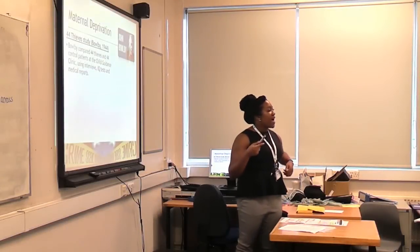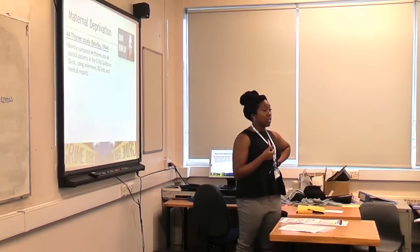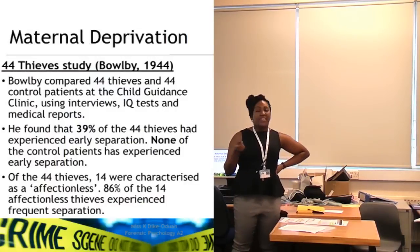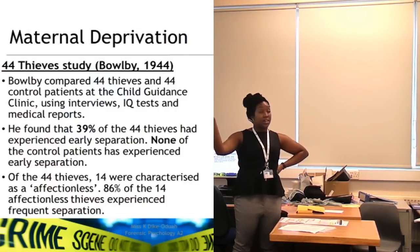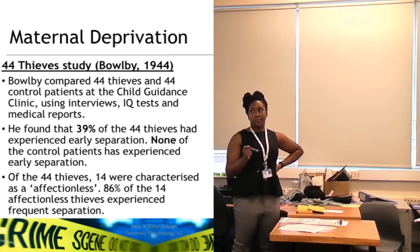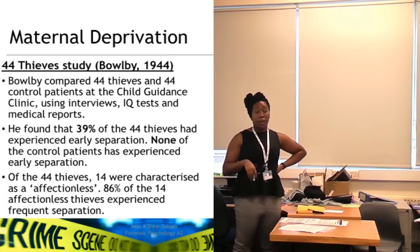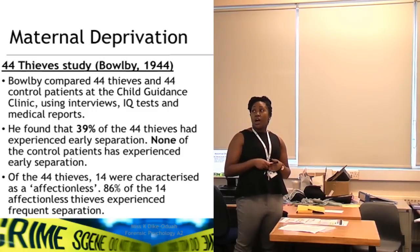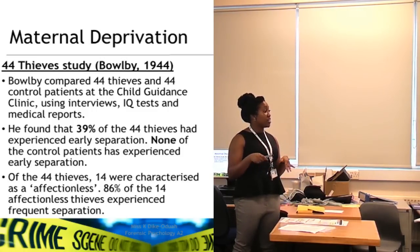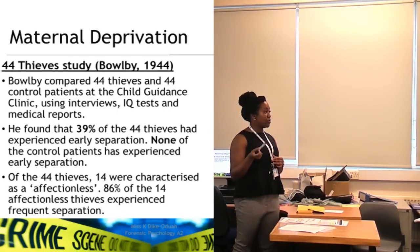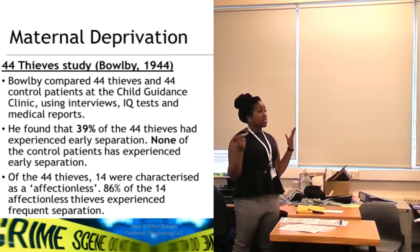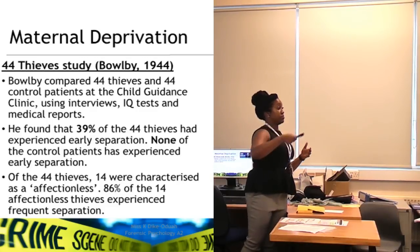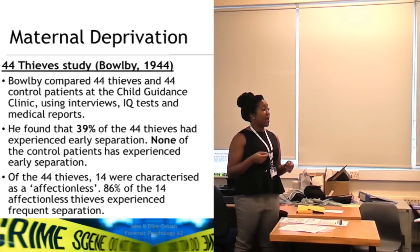As a recap, you would have looked at the 44 Thieves study in attachment theory. The easiest way to remember Bowlby and the year is that it was done in 1944. He compared 44 thieves and 44 control patients from a child guidance clinic using interviews, IQ tests, and medical reports. Already, evaluation points are screaming — social desirability bias on interviews means participants could present themselves in a positive light.